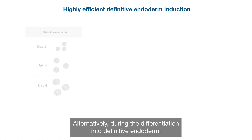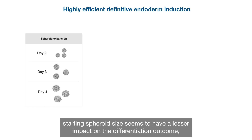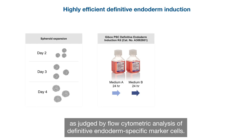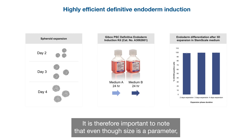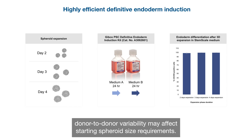Alternatively, during the differentiation into definitive endoderm, starting spheroid size seems to have a lesser impact on the differentiation outcome, as judged by flow cytometric analysis of definitive endoderm specific marker cells. It is therefore important to note that even though size is a parameter, its impact is context dependent. In addition to lineage specific bias, donor-to-donor variability may also affect starting spheroid size requirements.